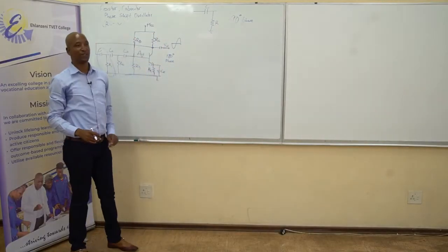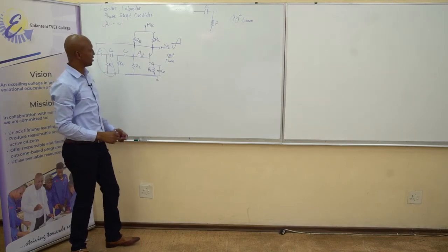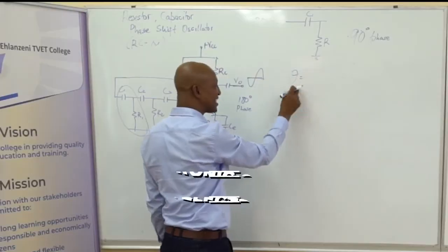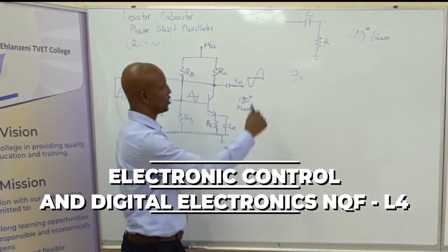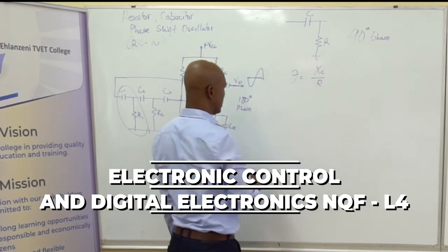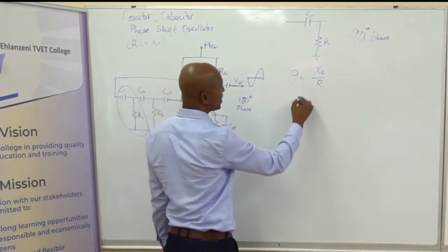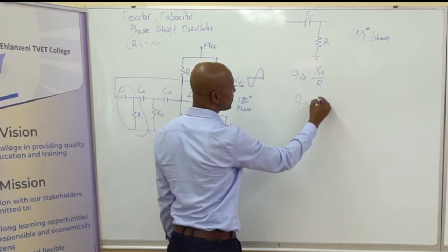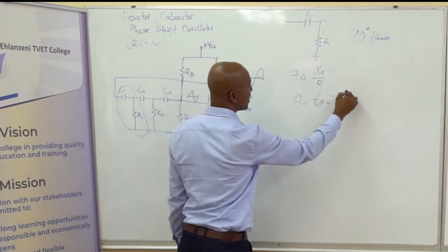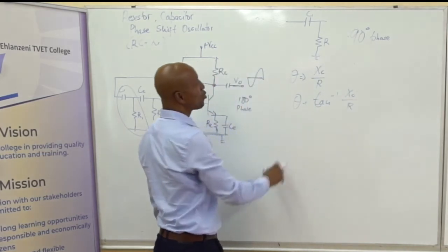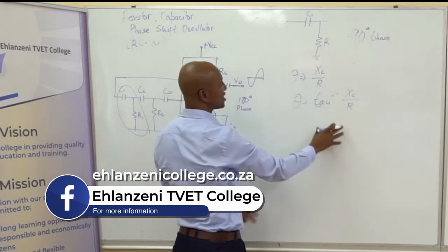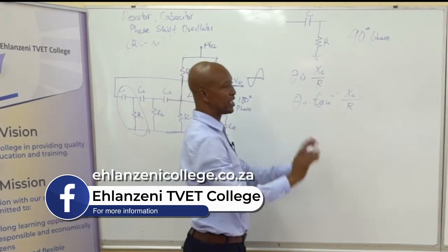The capacitor alone can provide 0 to 90 degrees. Once we have that kind of network, to find the phase angle theta, you need to know your XC and your R. The formula will be: theta equals arctan of XC over R. So we can now determine the value of R that will provide us with the certain phase that we need.